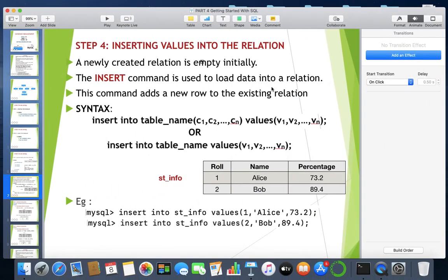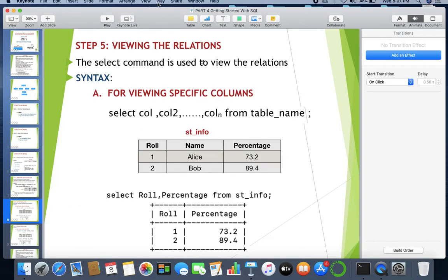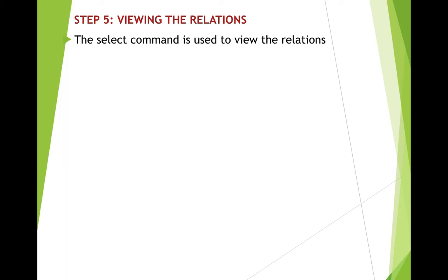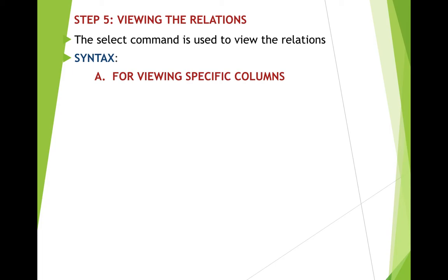Now we need to view the relations — that is, view the contents of the table along with its structure. For viewing the relation we use a command known as the SELECT command. The SELECT command is used to view the relation. For viewing specific columns, you may not want to view the entire data at once. For that, you give: SELECT column_name1, column_name2, ... FROM table_name. Whatever columns you require to be viewed, you give the column names separated by commas, then FROM table_name.